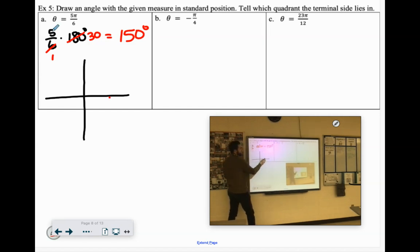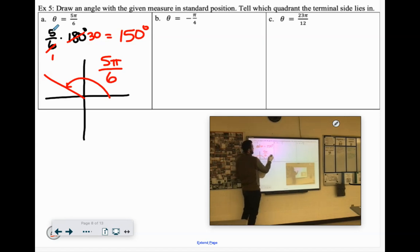So we're going approximately 150 degrees, which will be about there. But we're going to label it with the 5π over 6 radians. And which quadrant does that lay in? Remember your quadrant order. It's kind of like the letter C, right?